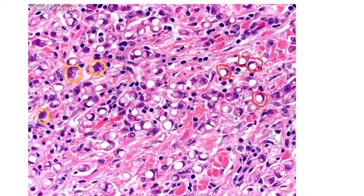These are malignant cells, and these particular cells are signet ring cells. They are also malignant, but the presence of mucin pushes the nucleus to one side, making them appear as a ring — hence they are called signet ring cells. You can see there are sheets of malignant cells.